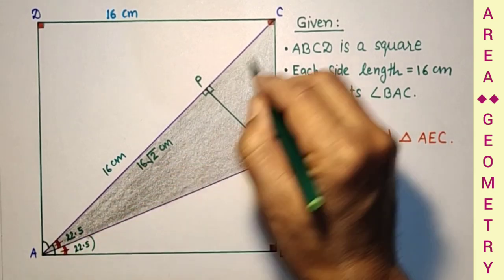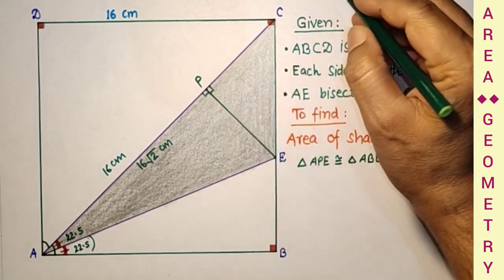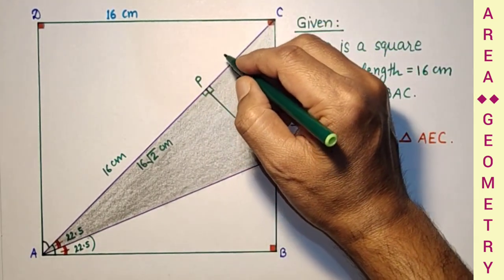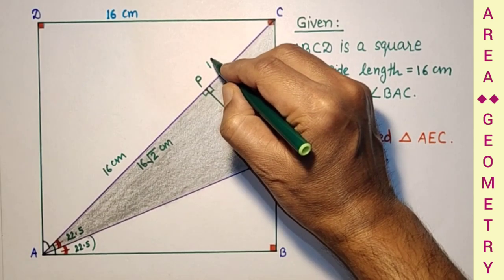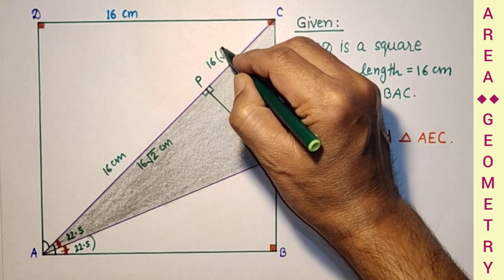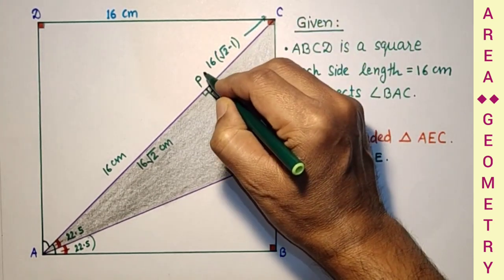And the whole diagonal AC is 16 root 2 cm. So PC we can say will be 16 root 2 minus 16. Take 16 common, so root 2 minus 1. Only PC is this.